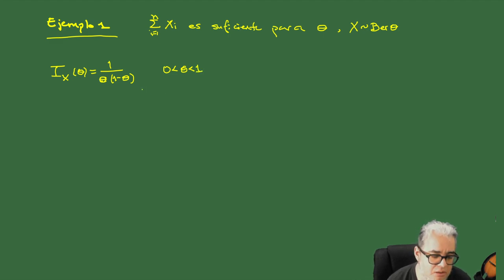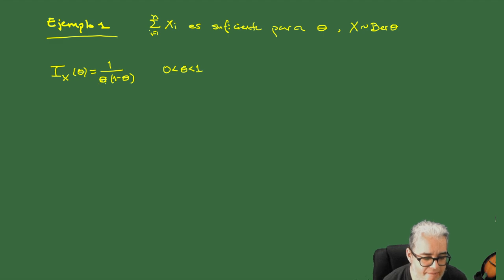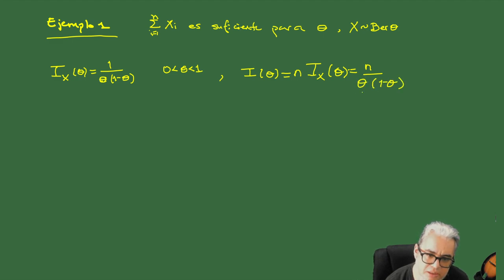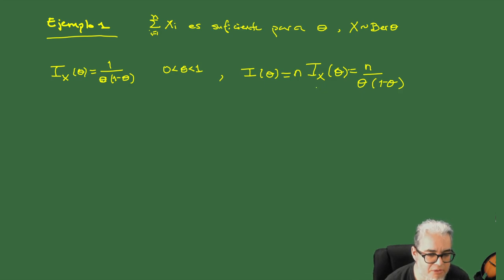Esto es para theta entre 0 y 1. La información de Fischer para la muestra va a ser n veces esa cantidad, es decir, n sobre theta por 1 menos theta, que ya habíamos visto que es la información de Fischer para una binomial. Y en ese caso ya habíamos visto que T era suficiente.